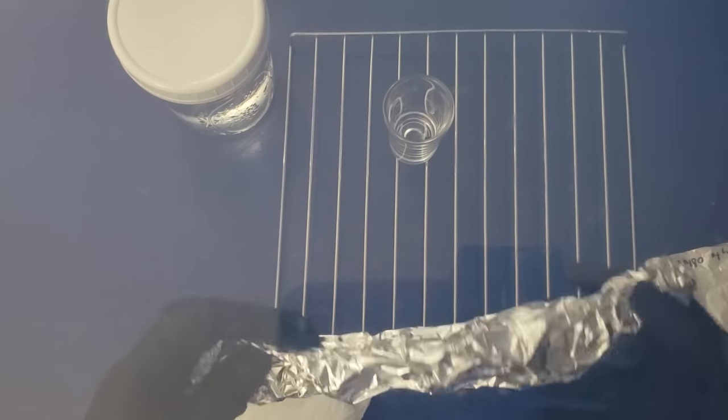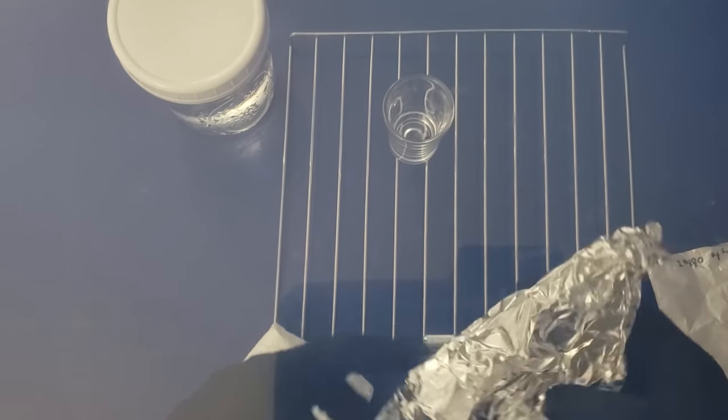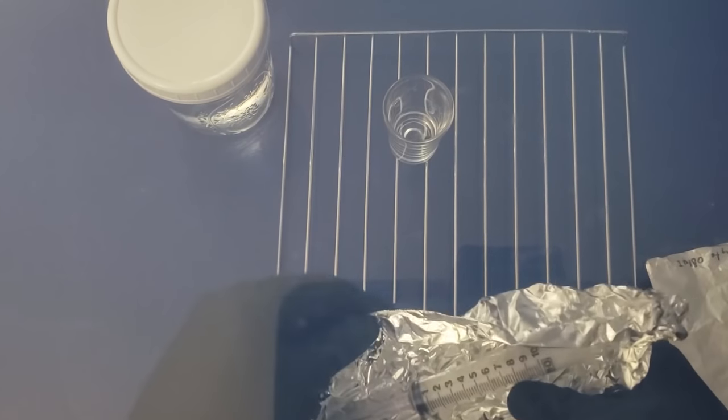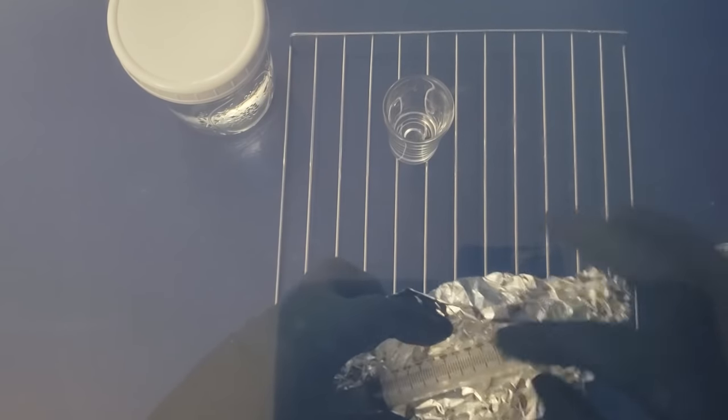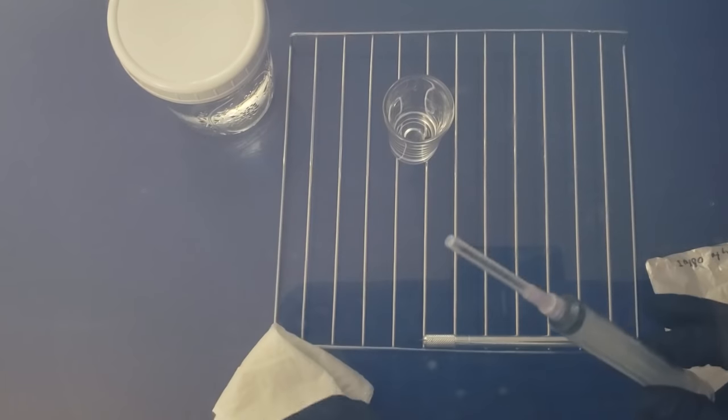All right, with the spores in the shot glass, we'll go ahead and remove the spore syringe from our foil here. Now we have a nice clean sterile spore syringe to work with.